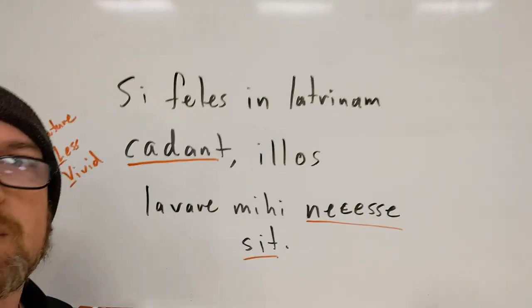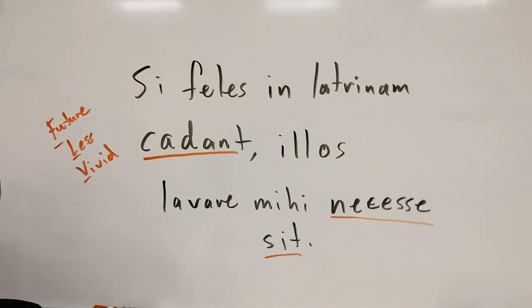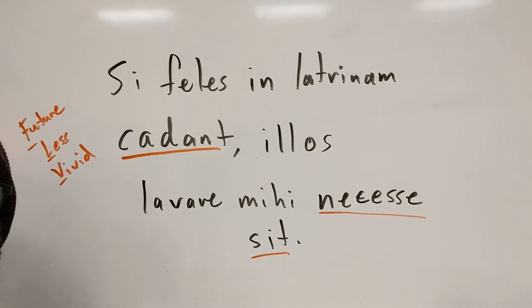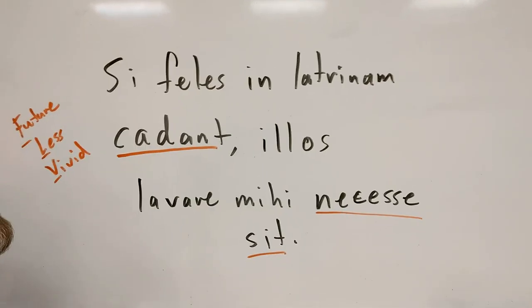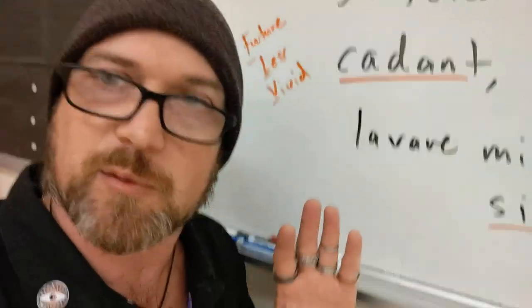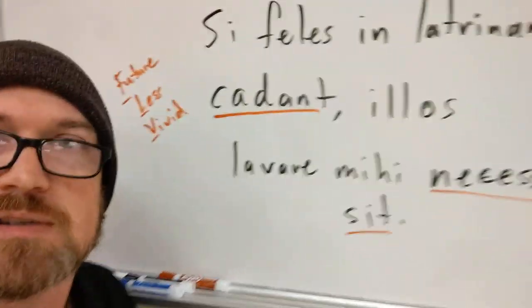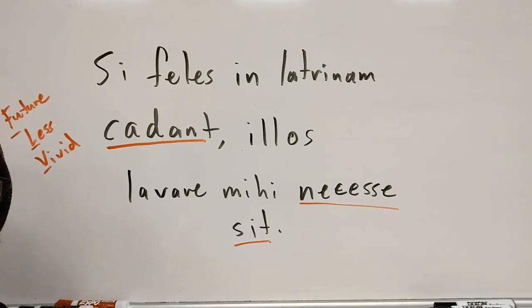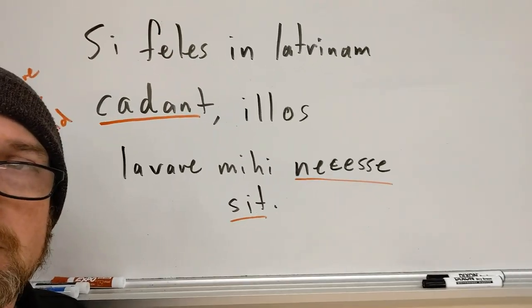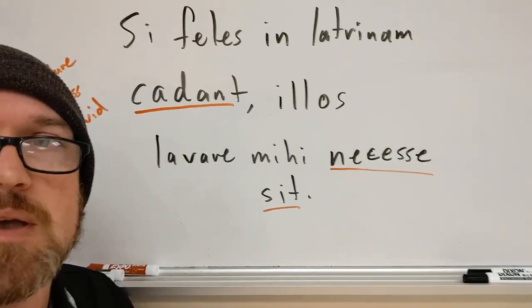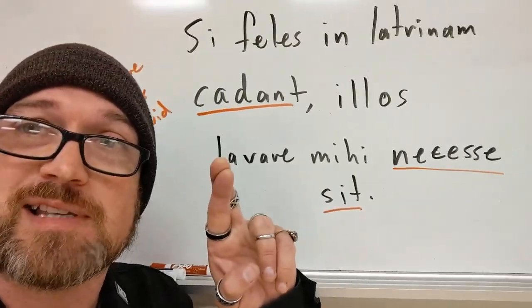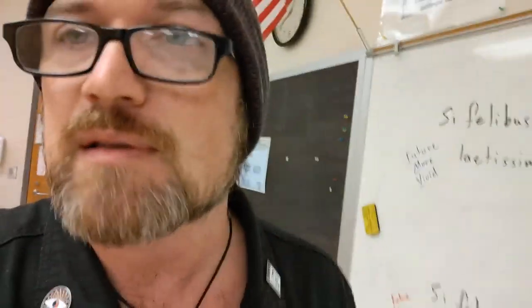Compare that to this one: the future less vivid — the unreal version of the future, and yes, they really do call it that. You can see I've got subjunctive verbs but they're in the present tense, even though this is about the future. It says: if the cats should fall into the toilet, it would be necessary for me to wash them. By throwing in 'should,' I'm implying it won't happen. But if it should happen, then I would have to do this. All right, I'm going to get this posted and I will see you guys in a few hours. Bye.